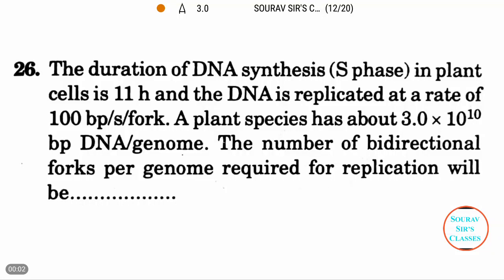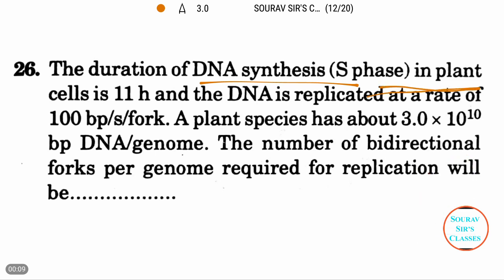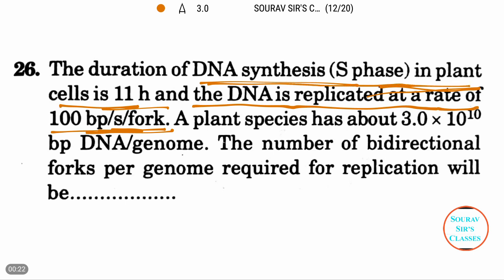Hello students, welcome to Show of Sir Classes. This question is about DNA synthesis. DNA synthesis occurs in S phase, which in a plant cell is 11 hours, and DNA is replicated at a rate of 100 base pairs per second per fork.